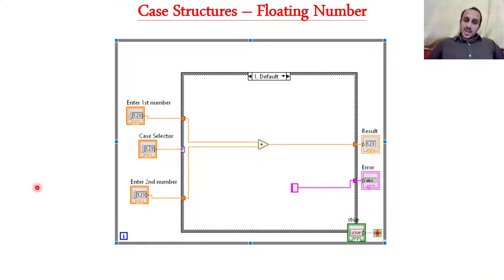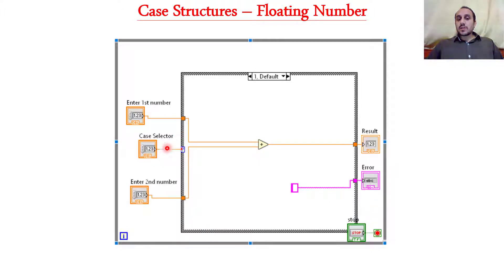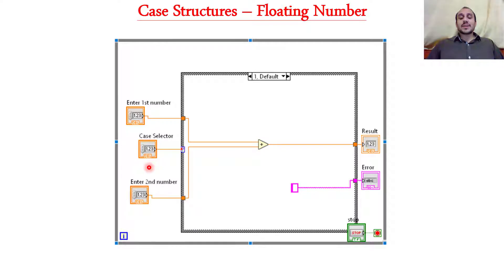This is a case in which we attached a floating number with the condition terminal. We attached a floating number. Floating numbers are real numbers, which means the user can enter any number — for example, 1.2, 2.4, 6.8 — it can be any number.